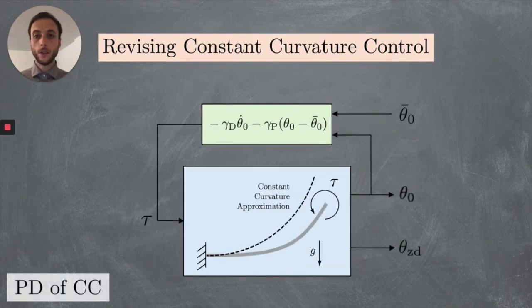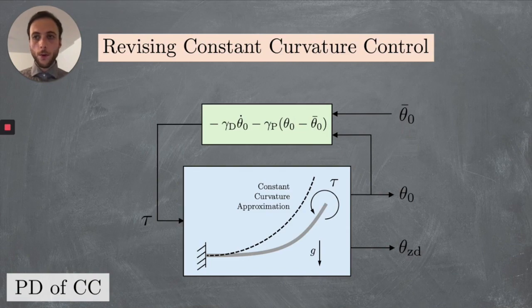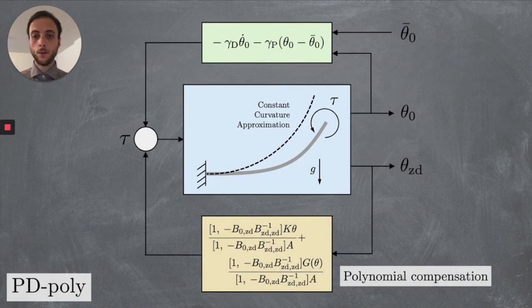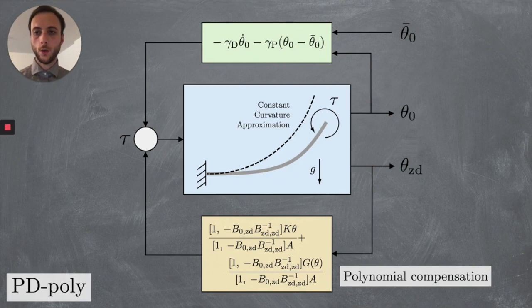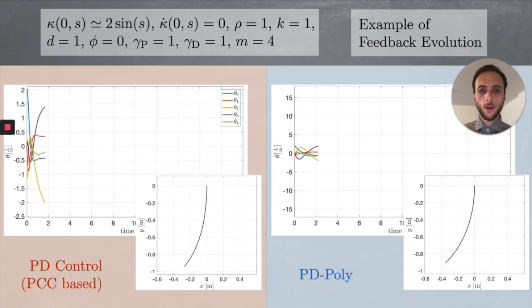And let's consider here instead how we can take into account these high-order terms in closing the loop. Let's start from the simplest constant curvature-based feedback controller that we can think of, which is the PD. And we propose to add to that a term, which is a sort of polynomial compensation of impedance and gravity terms, which takes into account all the information that we have on the system, not just the constant curvature part.